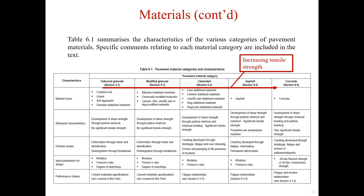This table summarizes the characteristics of the various categories of pavement materials. From this table, we can find the material type, the behavior characteristics, the distress modes, the input parameters for design, and performance criteria for different pavement materials. From unbound granular materials on the left to concrete on the right, the tensile strength gradually increases.